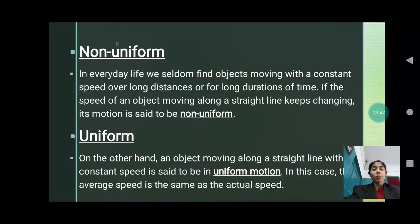Now what is uniform motion? If any vehicle is moving at the same speed, suppose 40 km per hour speed, that is uniform motion. There is no stop between that. On the other hand, an object moving along the straight line with constant speed is said to be in uniform motion. In this case, the average speed is the same as the actual speed.